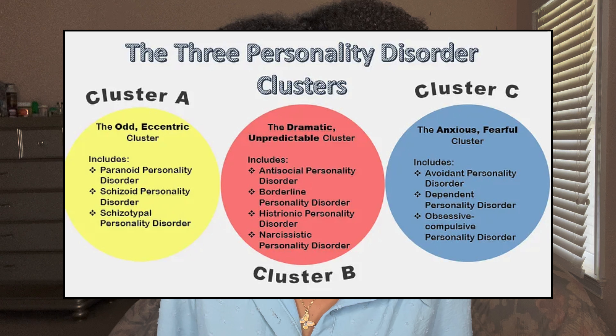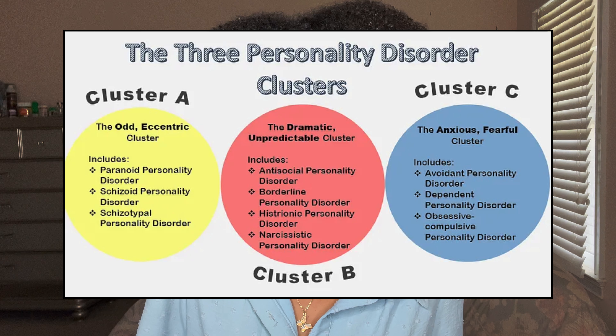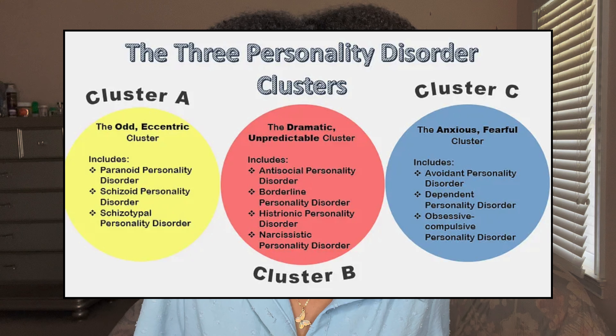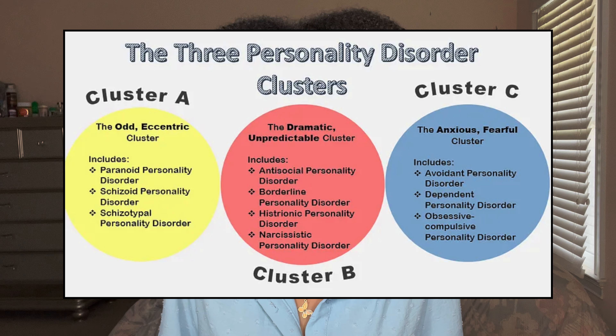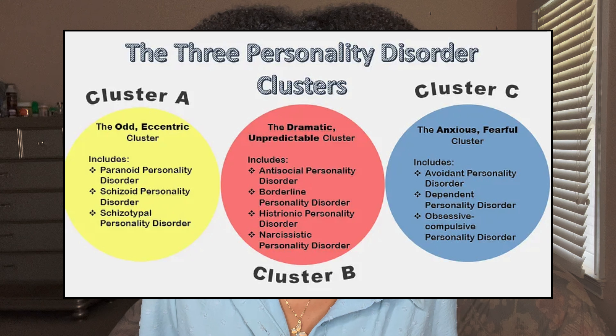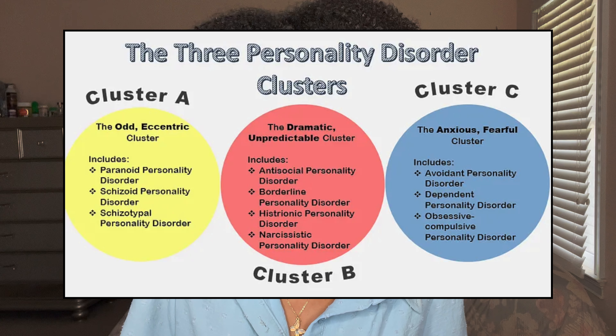The 10 personality disorders are divided into three clusters: A, B, and C. Cluster A is the odd or eccentric cluster, and it includes paranoid personality disorder, schizoid personality disorder, and schizotypal personality disorder. Cluster B is the dramatic and unpredictable cluster, which includes antisocial, borderline, histrionic, and narcissistic personality disorders. Cluster C is the anxious and fearful cluster, which includes avoidant, dependent, and obsessive-compulsive personality disorders.